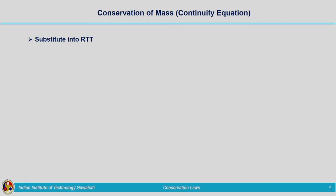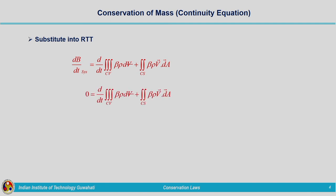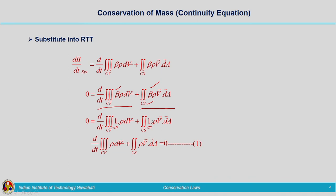Now we will look into the RTT expression. Here we will substitute dB by dt of system equal to 0. We are having the expression on the right hand side: one part is related to control volume and the second part is related to control surface. Here we are going to substitute for beta. Beta is the intensive property that we have found out to be 1 if the extensive property is mass, so we are substituting 1 for beta. Our expression will come out to be: d by dt of volume integral of rho dv within the control volume, plus surface integral of rho v dot dA across the control surface, is equal to 0.